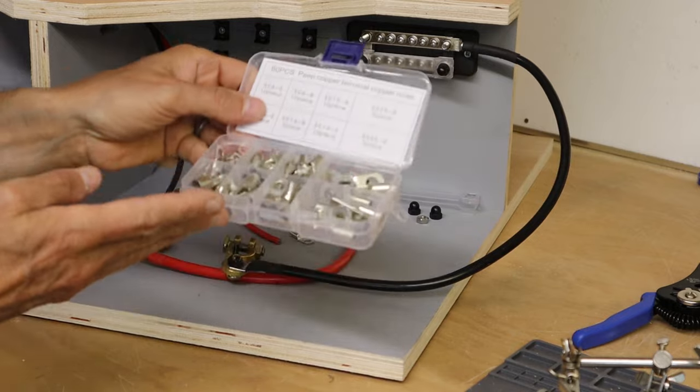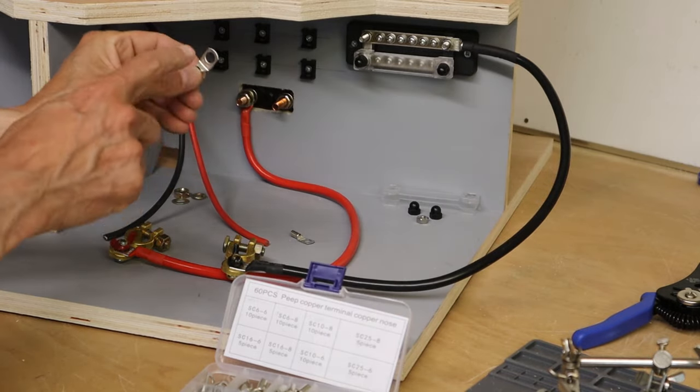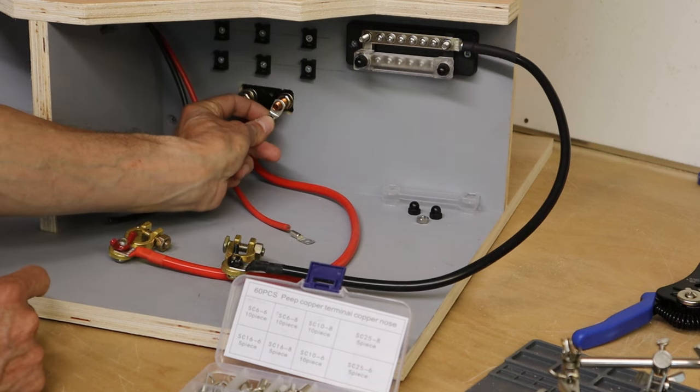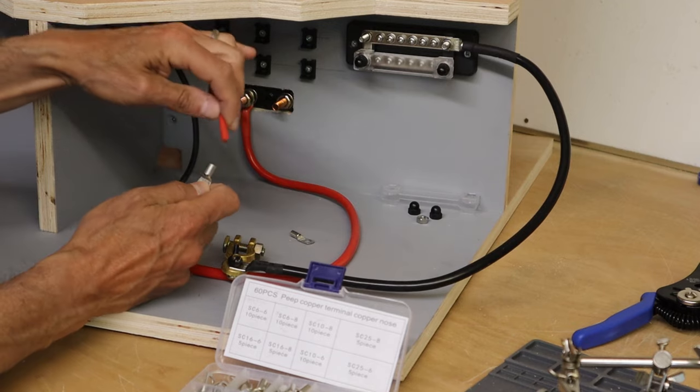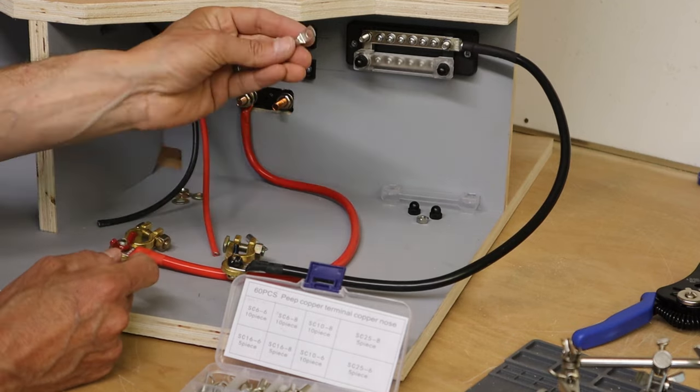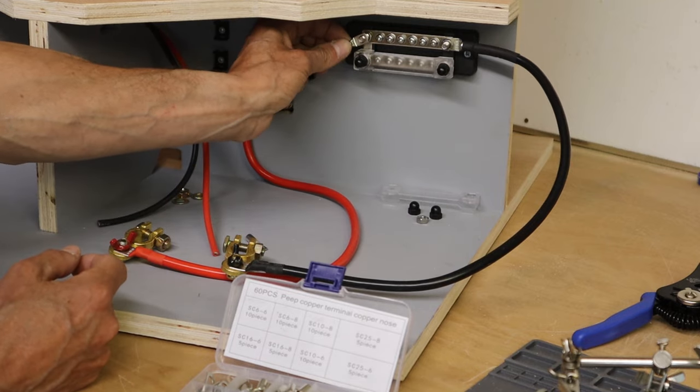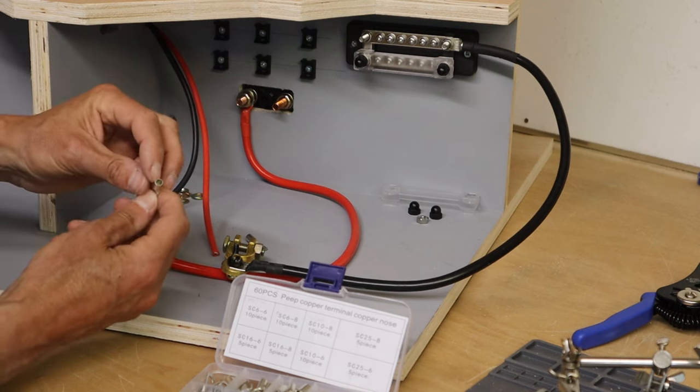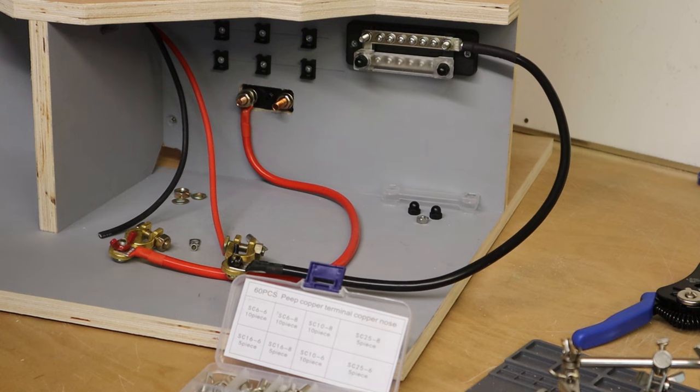So this little selection box of terminals has been really handy. For the red one we've got one with quite a large hole to fit onto the main switch but a reasonably small entrance for the wire, so that should be fine. And then for the buzz bar we've got one with a slightly smaller hole which fits neatly onto the M6 screw but with a suitable size for the black wire. So I'm going to get on and solder those.